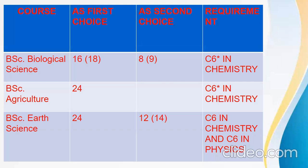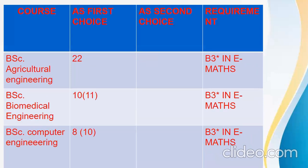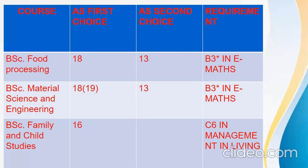BSc Earth Science is 24 as your first choice, and as a second choice you should have no less than aggregate 12 for males and 14 for females. The requirement is C6 in chemistry and C6 in physics. BSc Agricultural Engineering is 22 as your first choice, requirement B3 in elective maths. BSc Biomedical Engineering is 10 for males and 11 for females, B3 in elective maths. BSc Computer Engineering is 8 for males and 10 for females, B3 in elective maths. You can see the trend — at least B3 in elective maths is required for engineering courses because of the calculation-heavy nature, so your foundation should be stronger to sail through successfully.